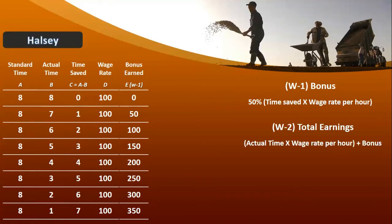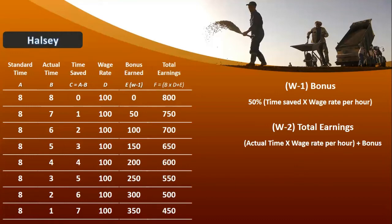Second: Total Earning. Total earning ka formula kya hai? Actual time jo aapne kaam kiya hai, multiply by wage rate per hour, plus bonus. To aapke paas 8 multiplied by 100 plus 0 — first condition mein 800 rupees total earning aa rahi hai. Aur gradually aapki earning — time spend karte hain aur aapki earning bhi decrease ho rahi hai.